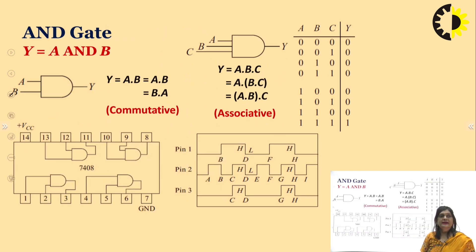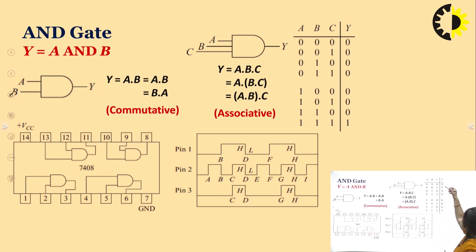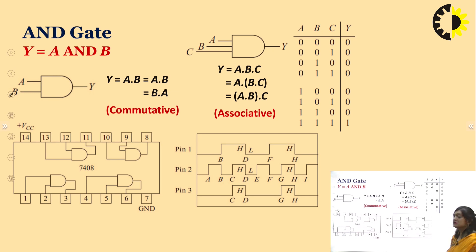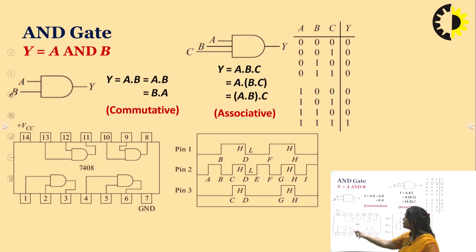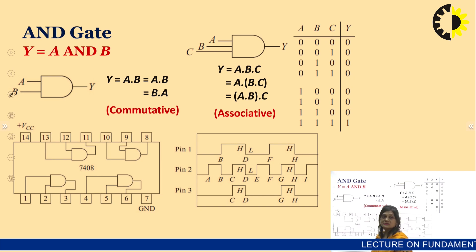For the AND gate, the truth table shows 3-input combinations. We get only 1 when all 3 inputs are 1. The IC for the AND gate is 7408, and it contains 4 AND gates. Pin numbers 1 and 2 are the inputs and pin number 3 is the output.